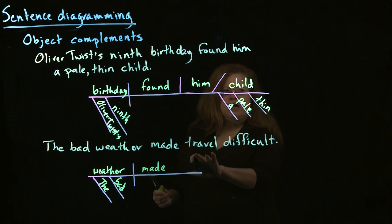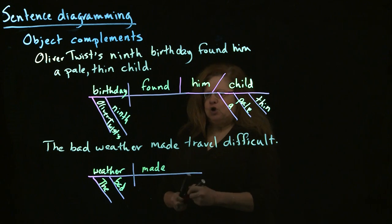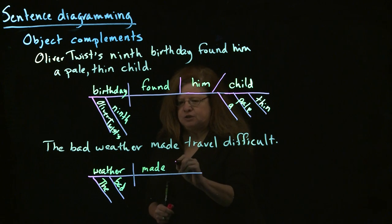And then, we have travel, which is what the verb is acting on. So, we have that as a direct object.